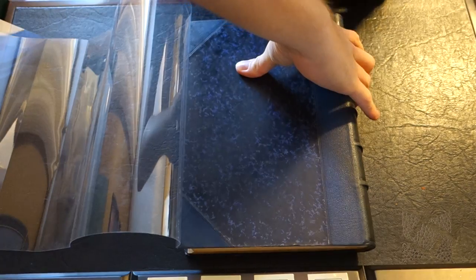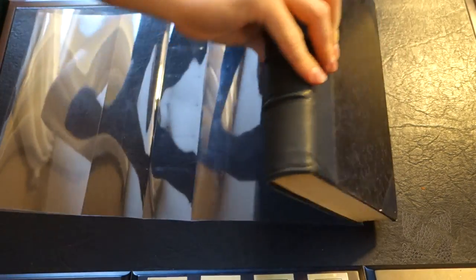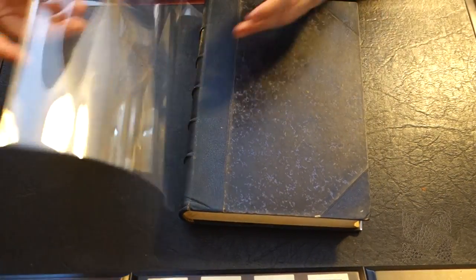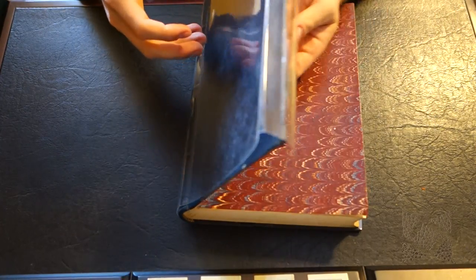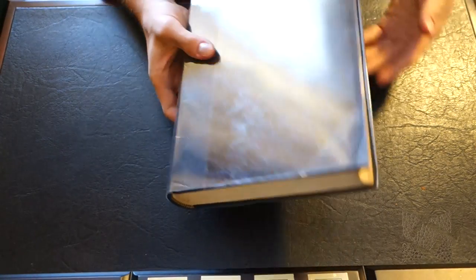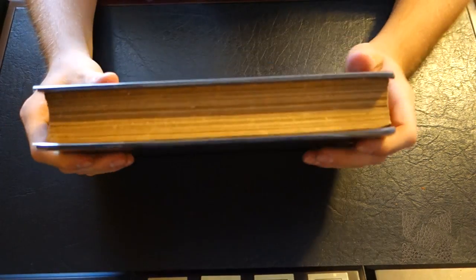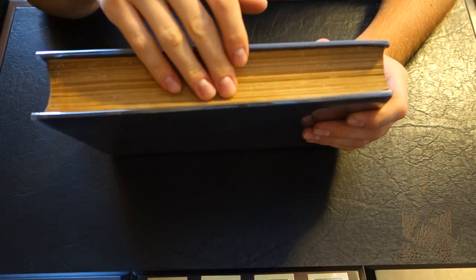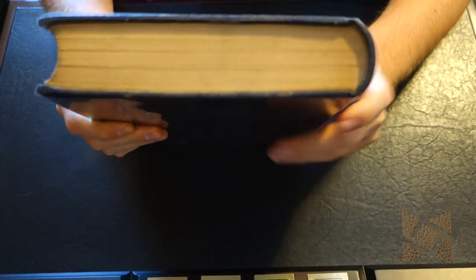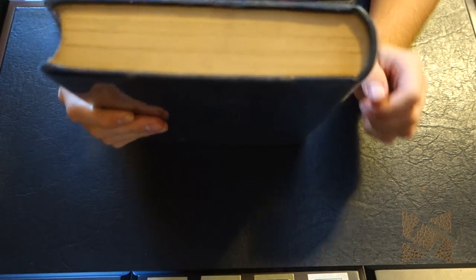So flip that back over again and throw the protective cover back on here. The book does have the gold on the top but not on the sides or the bottom, and on the sides you can see here with the edge it has roughed out a little bit and the bottom as well.